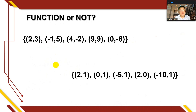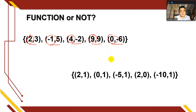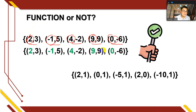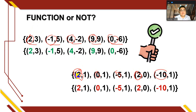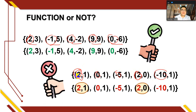Let's determine if a relation is a function. For the set (2,3), (-1,5), (4,-2), (9,9), (0,-6): inspect the first elements — 2, -1, 4, 9, 0 — all unique, so this is a function. For the second set: if 2 is repeated twice as a first element, then this is not a function because 2 appears twice in the domain.